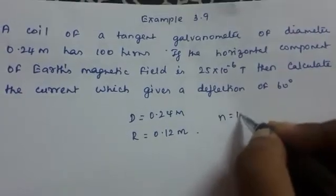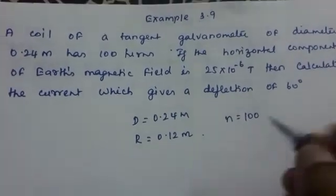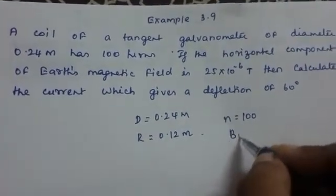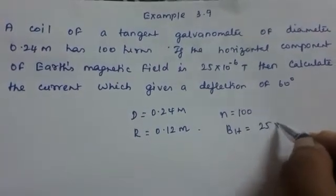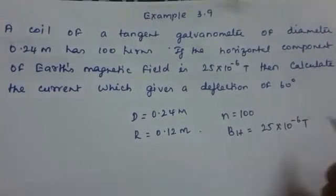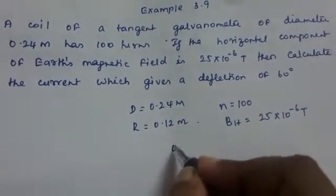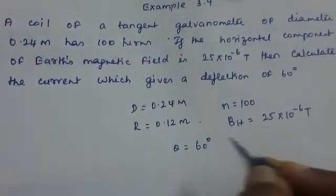The number of turns is given as 100 turns, n is equal to 100 turns. The Bh value, horizontal component of Earth's magnetic field, is given as 25 into 10 raised to minus 6 tesla. And the theta angle of deflection is given as 60 degrees.